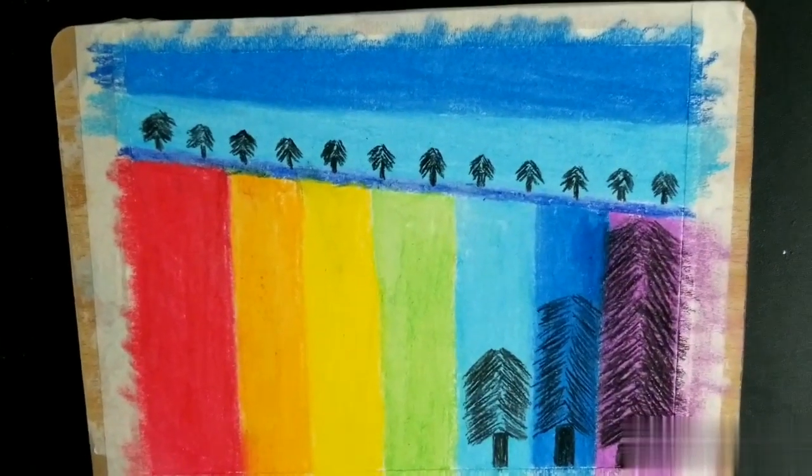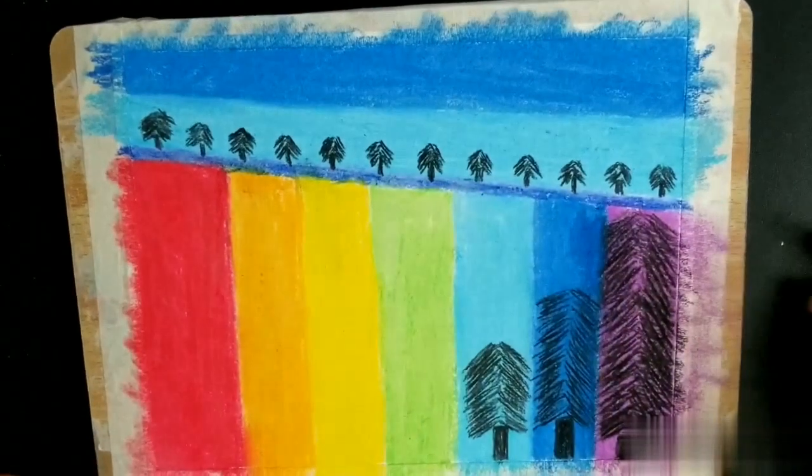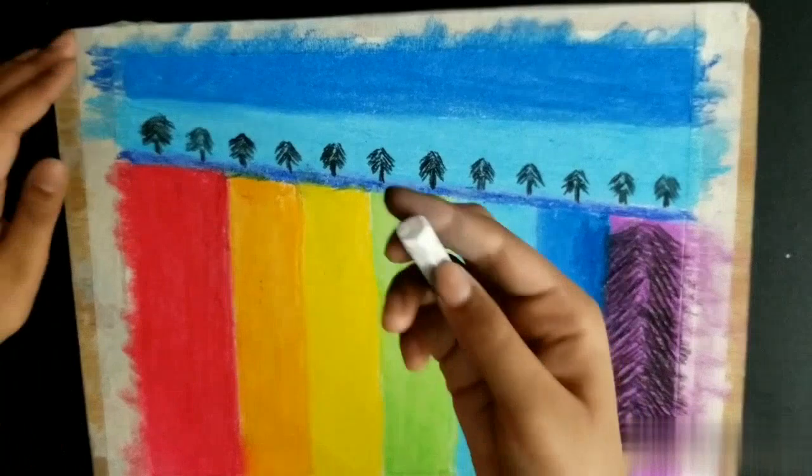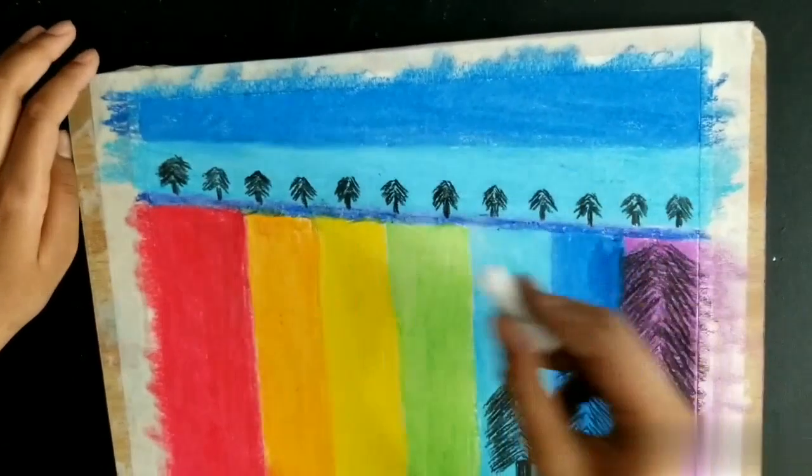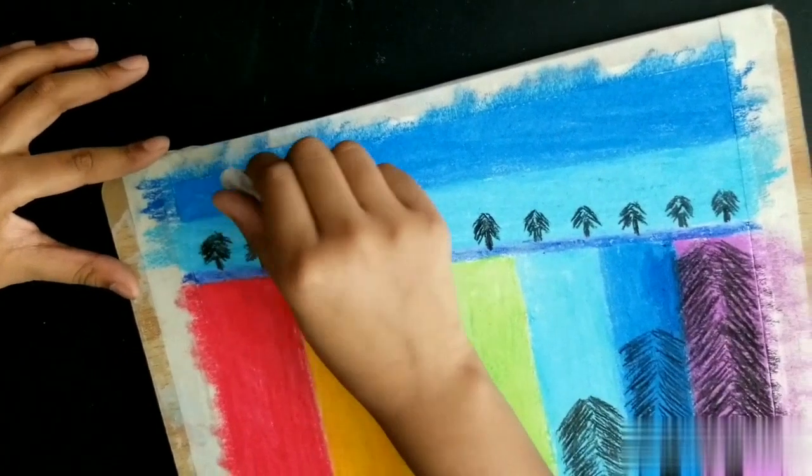So I did trees here and up here. Now we're going to draw the stars. We need white, and you can do dots or stars too. So I'm going to draw the dots first.